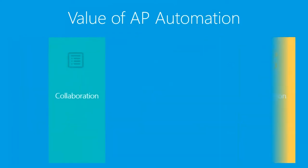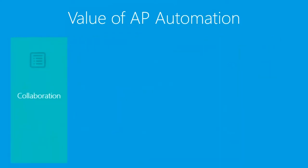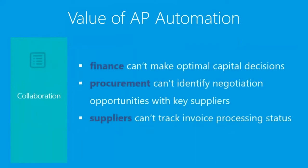Collaboration means finance has the ability to make optimal capital decisions. Without collaboration, procurement can't identify or negotiate opportunities with key suppliers, and if they don't have documents at their fingertips, suppliers can't track invoices for processing status. This is where we need that higher value add — collaboration is a key part of AP automation.